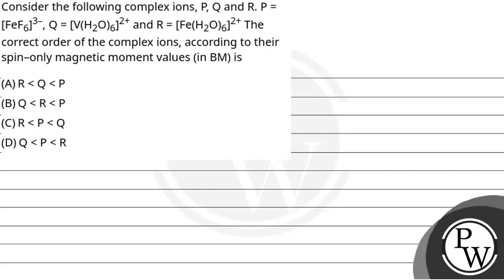Hello, let's see the question. The question is: consider the following complex ions P, Q, R. P is equal to this, Q is equal to this, and R. The correct order of the complex ions according to the spin-only magnetic moment values in Bohr magnetons. Let's understand first of all the key concept that we have to use in this question. The key concept is when we have to use the magnetic moment.